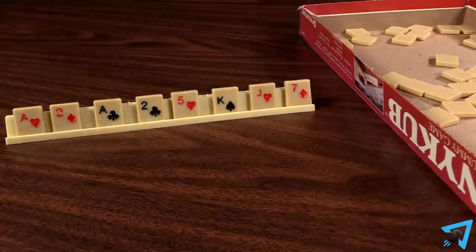Pick a player to go first, then play proceeds clockwise. On your turn, draw one tile from the box and add it to your rack.